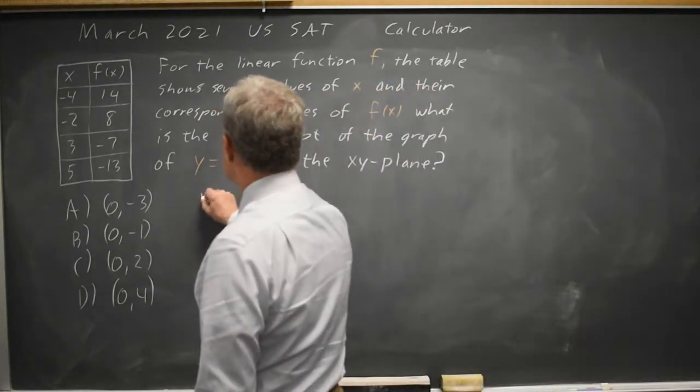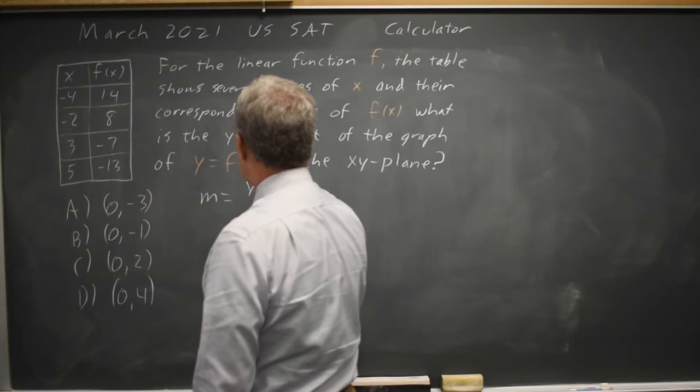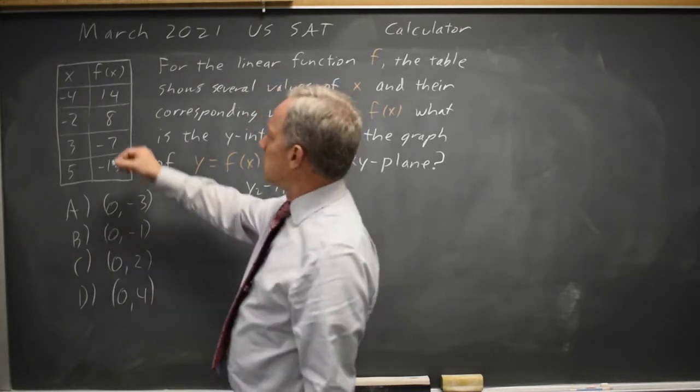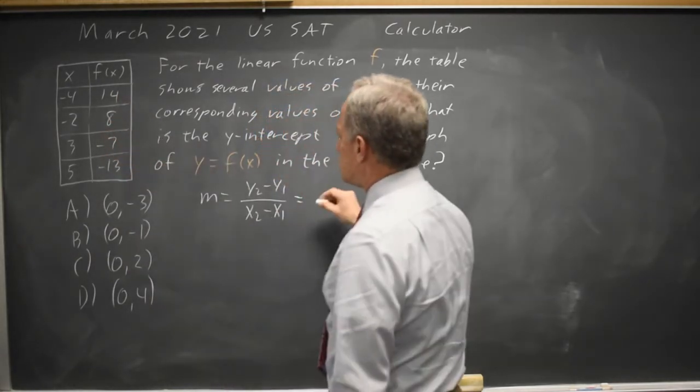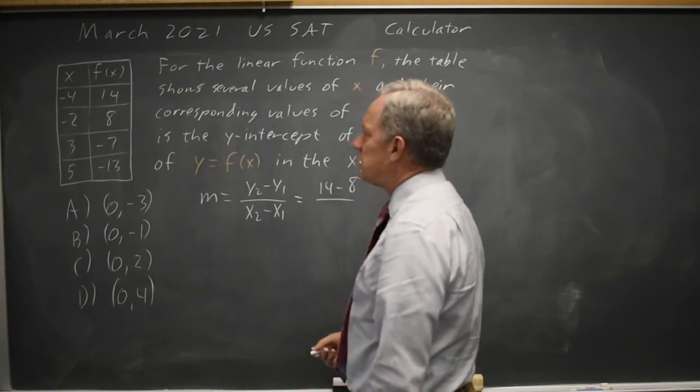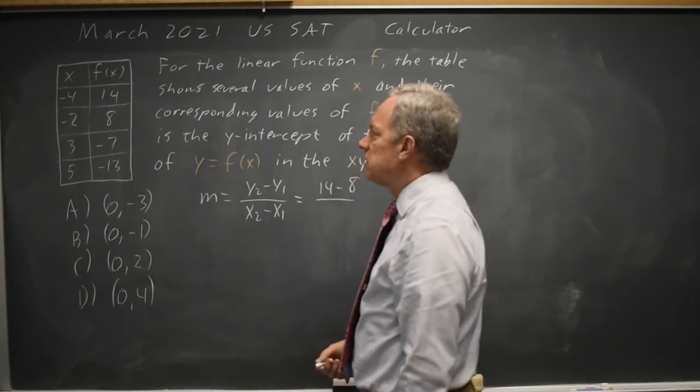First we'll find the slope which is y2 minus y1 over x2 minus x1. It's the difference in the y coordinates.